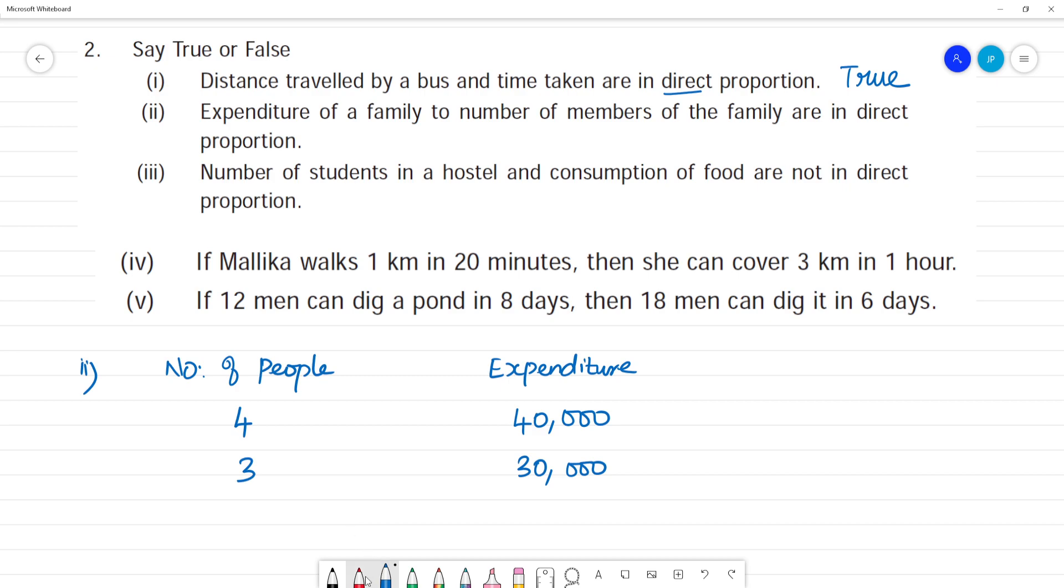What is the number of people? Number of people is less, expenditure is less. So one item increases - this is direct variation and this is true. Clear? Next.